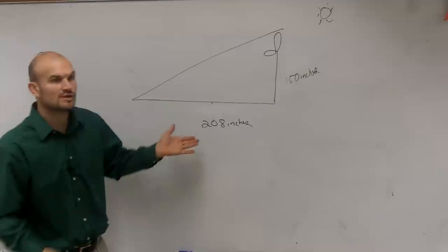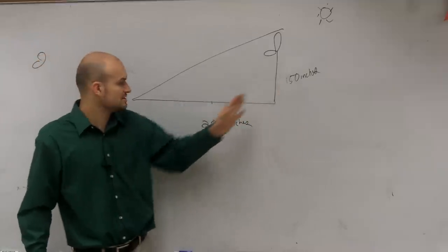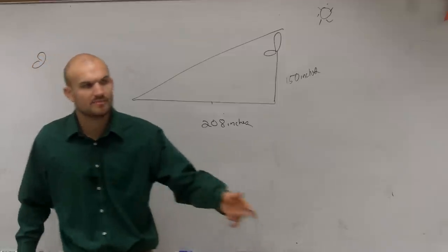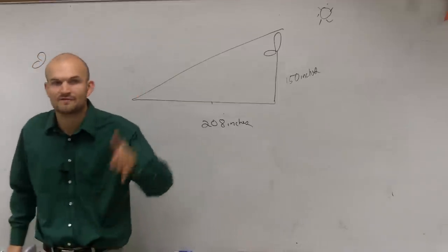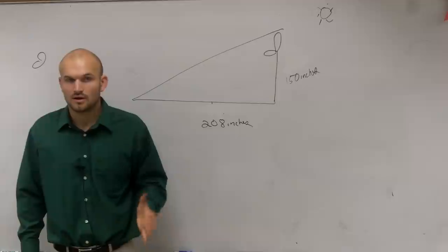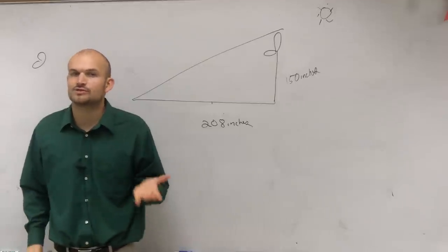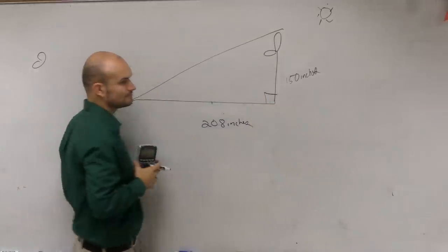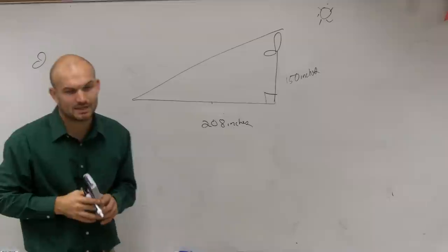So therefore, ladies and gentlemen, I have 150 inches and 208 inches. Remember, when we're creating our picture, the main important thing is we have to make sure we have right triangles. We have to be able to use our right triangles to solve for this. So I can see my backboard. That's going to create a 90 degree angle right there.